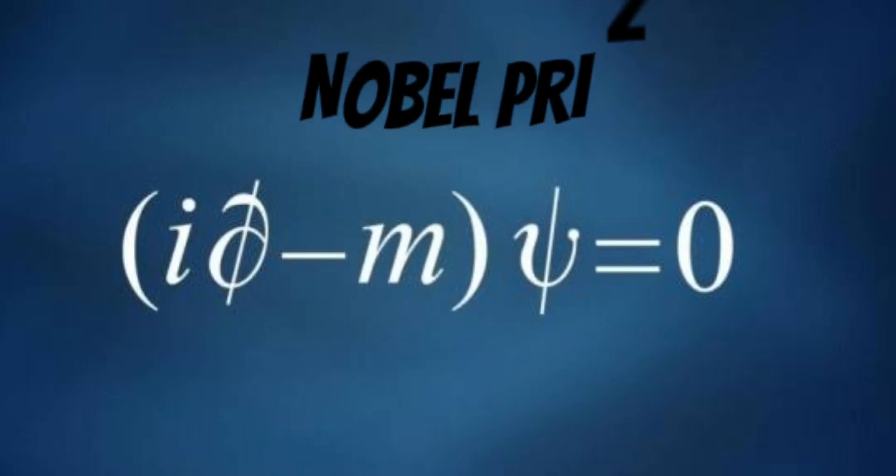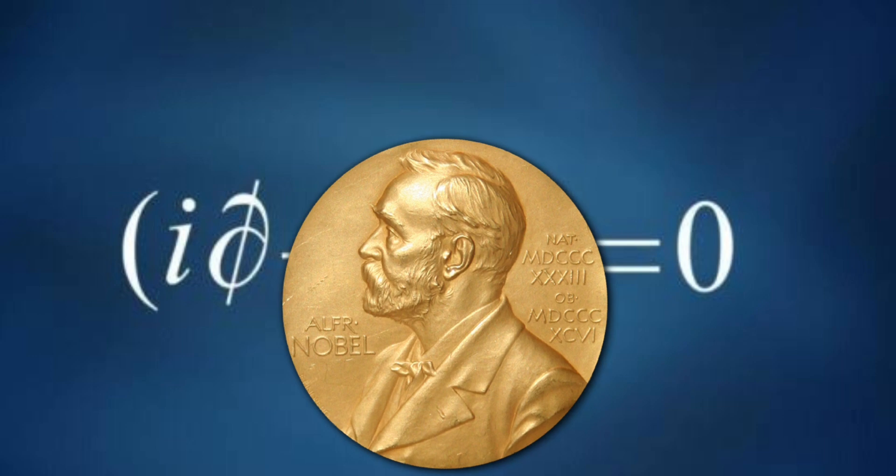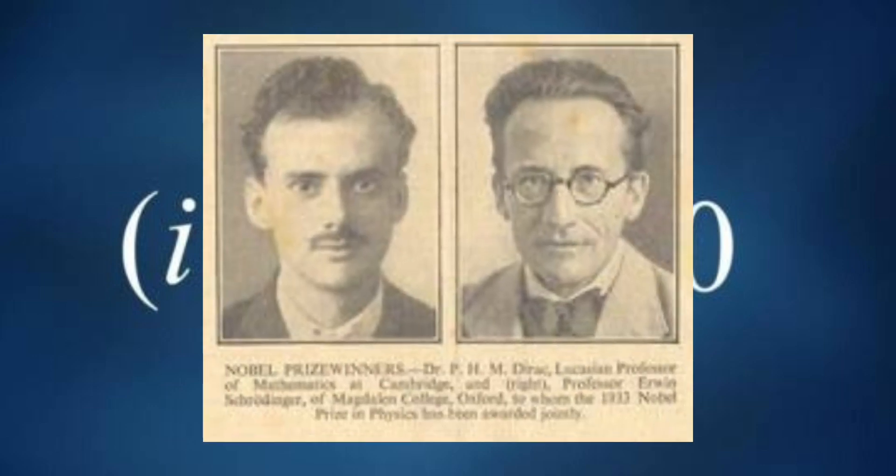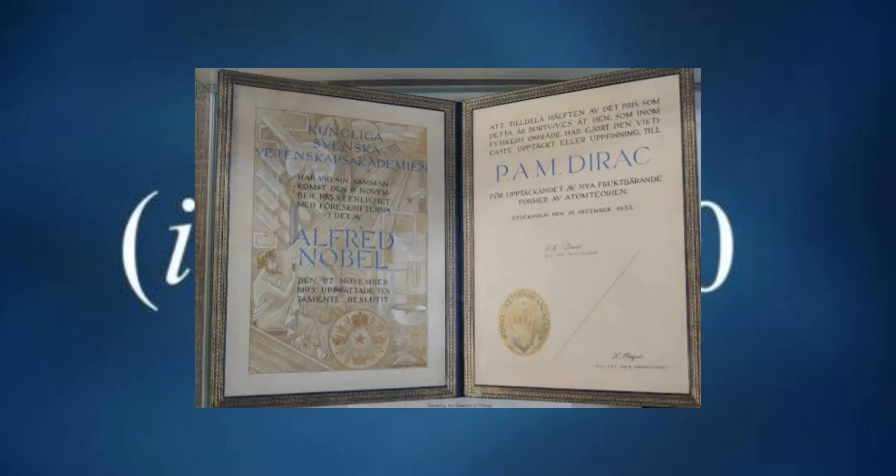Number 4: Nobel Prize. In recognition of his pioneering work, Dirac was jointly awarded the Nobel Prize in Physics in 1933 with Erwin Schrödinger. The Nobel Committee acknowledged their contributions to the development of new quantum mechanics, which had significant implications for our understanding of the atomic and subatomic world.